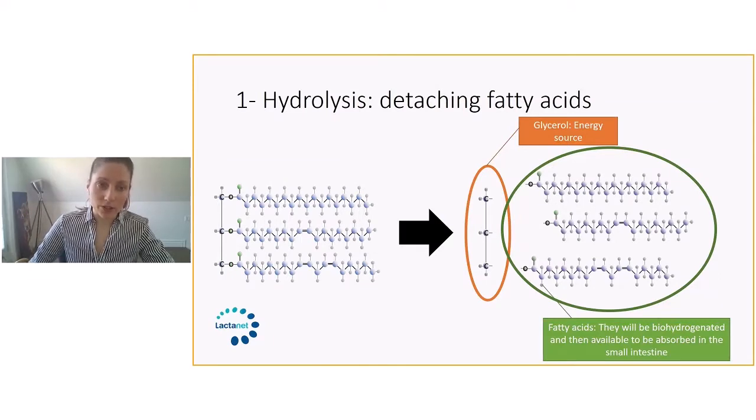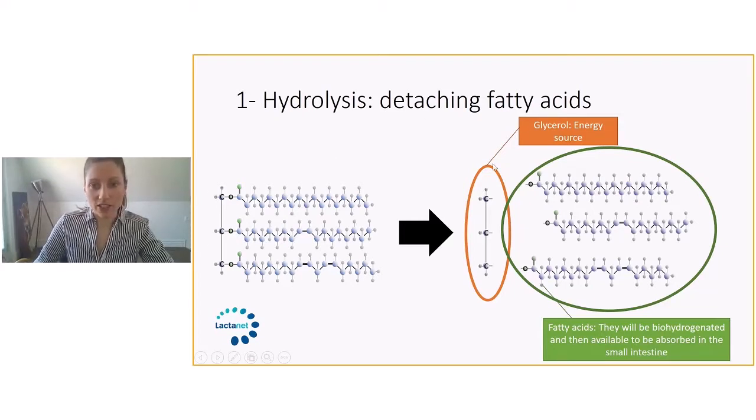Looking more closely into step one, the hydrolysis. This is the triglyceride here. The first step is detaching the glycerol from the fatty acid. Then this glycerol will become an energy source for the cow and the fatty acid will become free. The first one that we have here is a saturated fatty acid, meaning that there are no double bonds.